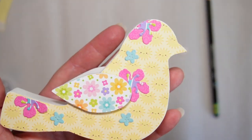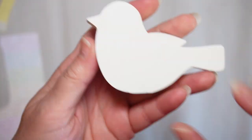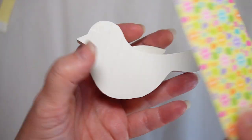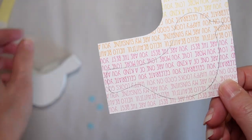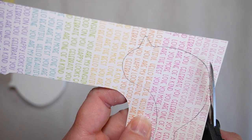This one's all done. Now I'm going to do the little guy. So I picked this pattern paper and I trace the other side onto the back, and I'll cut this out.